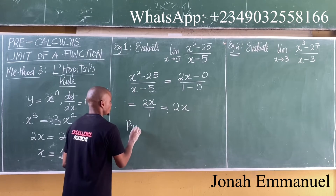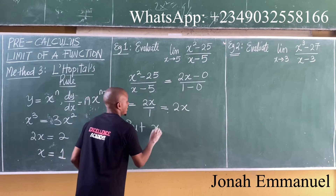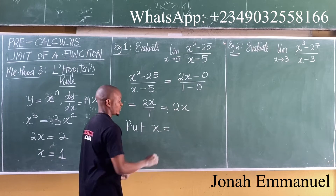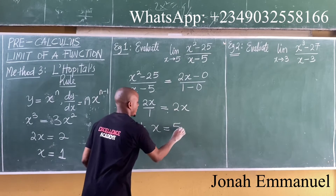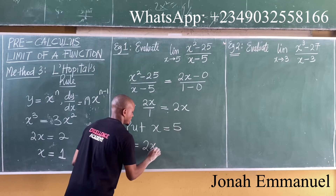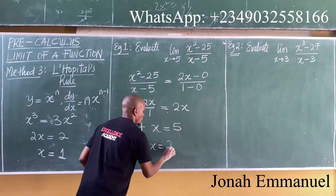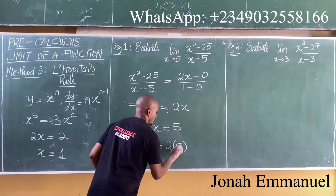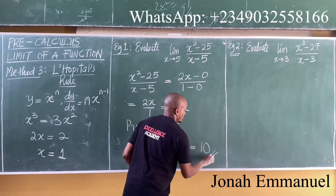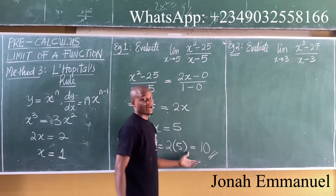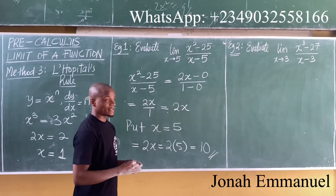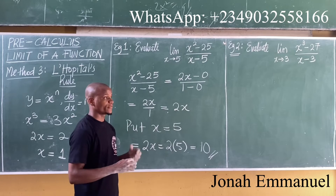At this point, put x equal to the given limit value, which is 5. So this becomes 2 times 5, which equals 10 — the same answer we had in our previous example.